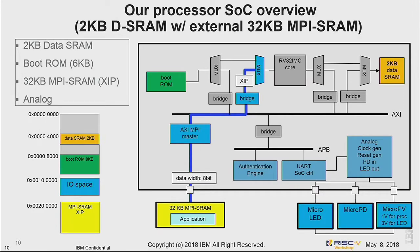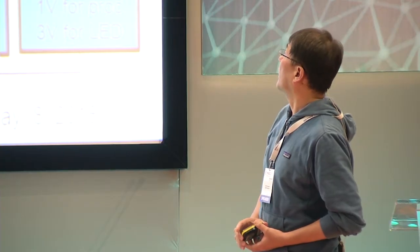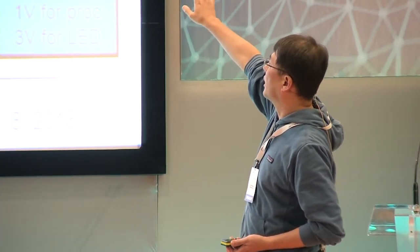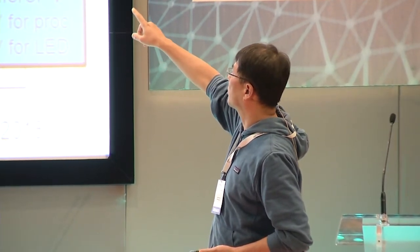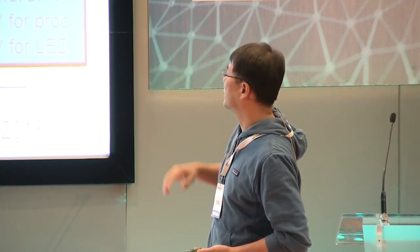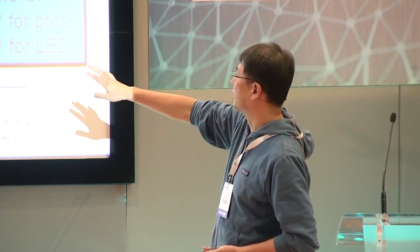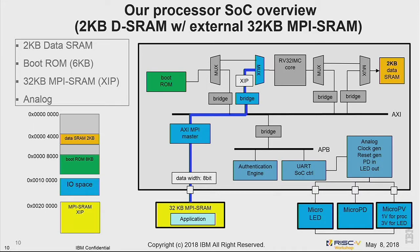This is the final architecture of our chip. The blue line shows the execution path — the code is stored in external SRAM and executed by the core through XIP. UART is driven by the PD and LED components. We have external micro-LED, micro-PD, and micro-PV cells, which generate 1V for the processor and 3V for LED driving.